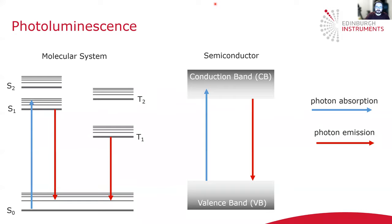I'm sure many people in the audience are already very familiar with photoluminescence, but for those who are new, photoluminescence refers to the emission of light from a material after it has absorbed light. This could be in a molecular system where absorption of a photon promotes the molecule from its ground singlet state to a singlet excited state, and then radiative relaxation from these excited states back to the ground state gives photoluminescence with the emission of photons. Photoluminescence also commonly occurs in semiconducting materials where absorption of a photon promotes an electron from the valence band to the conduction band, and the radiative relaxation back to the valence band results in the emission of a photon.